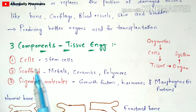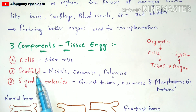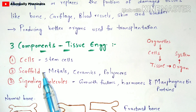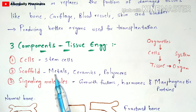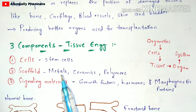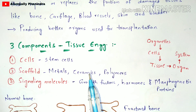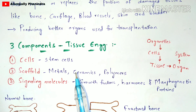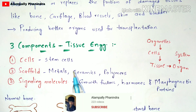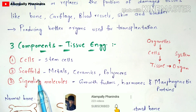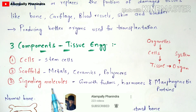Scaffolds are used for the growth and development of cells and also provide mechanical strength to the cells. Majorly used scaffolds are synthetic natural scaffolds such as metals, ceramics, and polymers. These are mainly used for the development of cells and for providing mechanical strength.